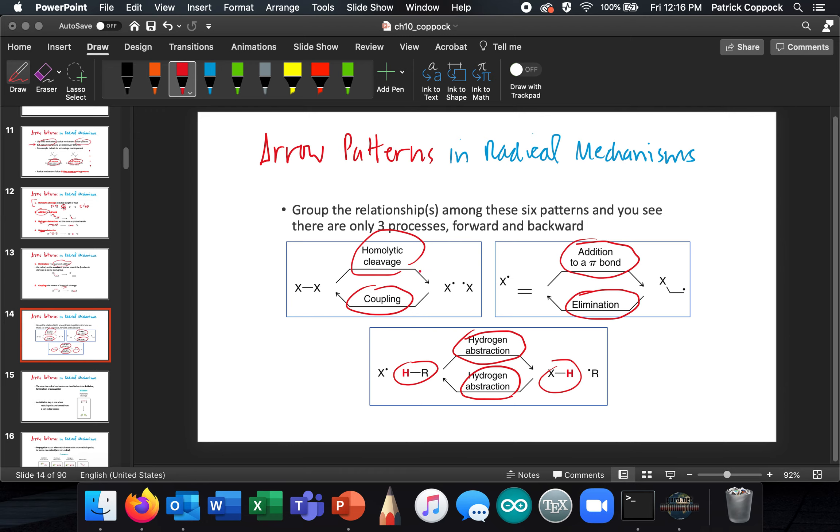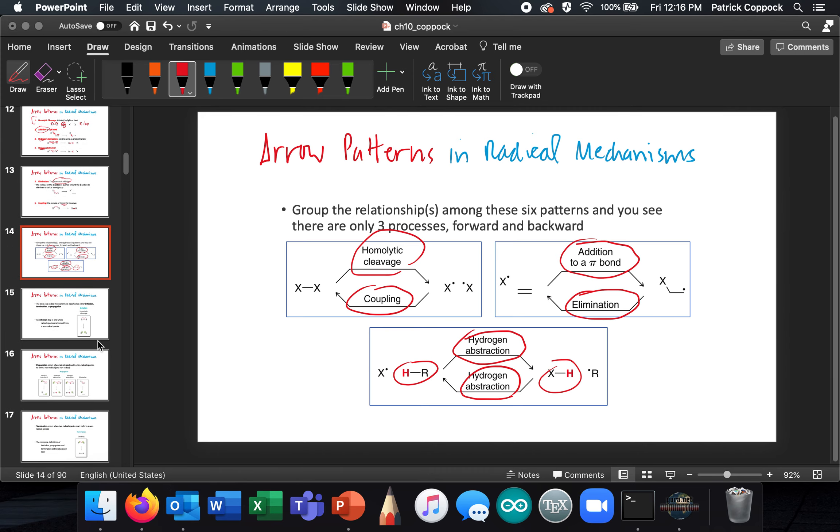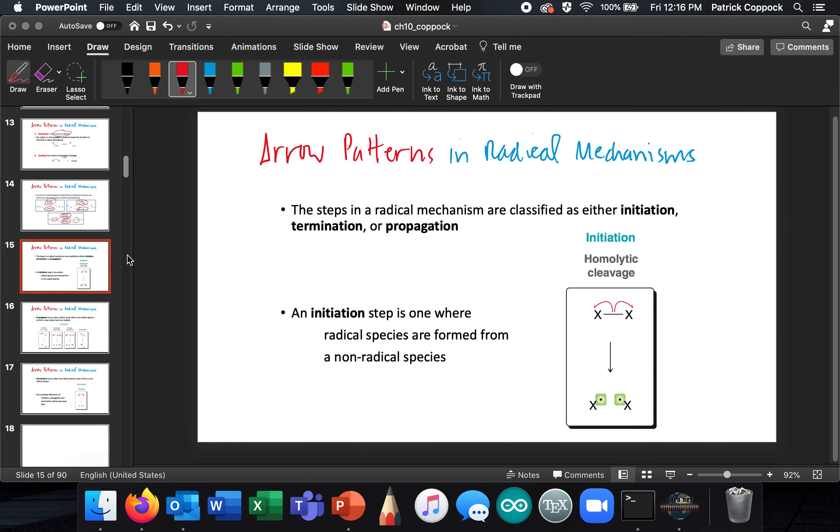Now, we're going to talk about these three relationships or patterns in terms of the steps of a radical mechanism. First of all, we have initiation. This is where everything starts. It starts when you get a bond, and then you have radicals after the bond. So this initiation might come from heat. It might come from light, hν. Either way, we have initiation where the whole thing starts. A bond is cut in half, homolytically, so we make radicals. That is where we get radicals from non-radical species.